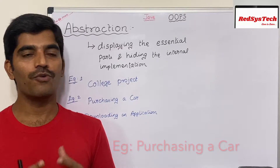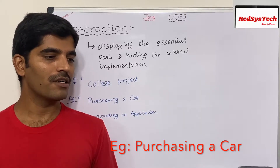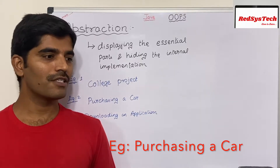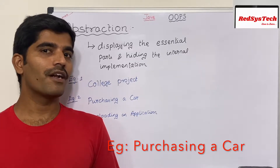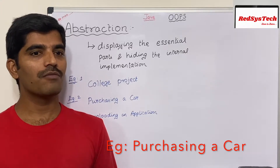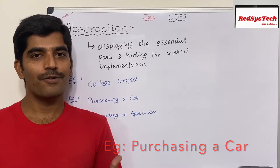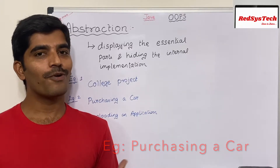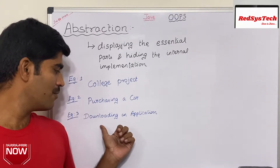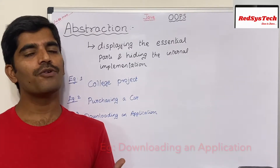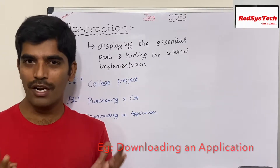Second example: purchasing a car. Say you go to a showroom and call the salesperson, who shows you the car and tells you features like auto gearing and start-stop. But if you ask how it is actually implemented — like what happens internally when you start the car — the salesperson says, 'I don't know how it is implemented; we are here only to offer the services provided by the car.' This is how abstraction works.